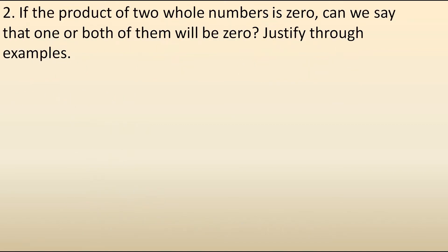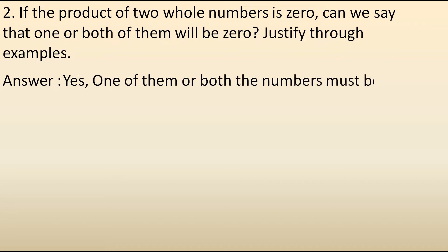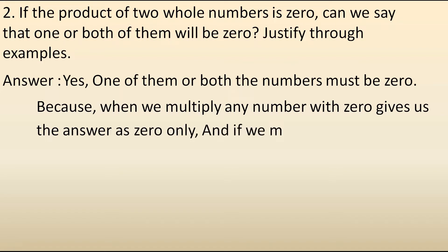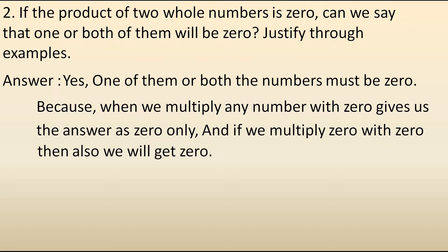The second question is: if the product of two whole numbers is 0, can we say that one or both of them will be 0? Justify through examples. The answer is yes, because one or both numbers must be 0, since multiplying any number with 0 gives 0. For example, 5 into 0 gives 0.